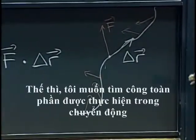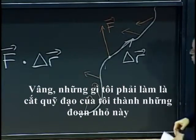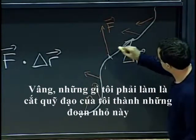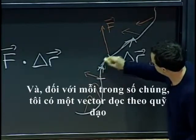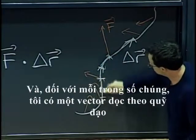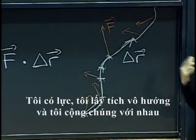So, then I want to find the total work done along the motion. Well, what I have to do is I have to cut my trajectory into these little pieces. And, for each of them, I have a vector along the trajectory. I have the force. I do the dot product, and I sum them together.